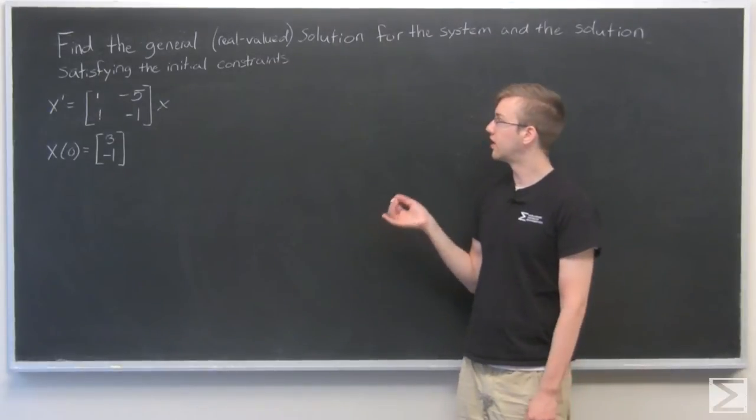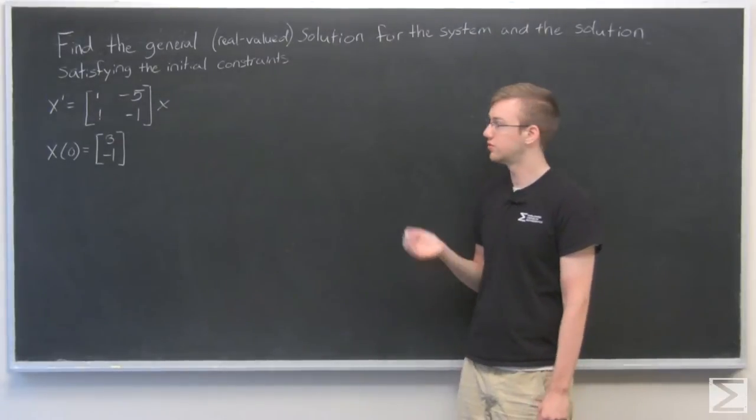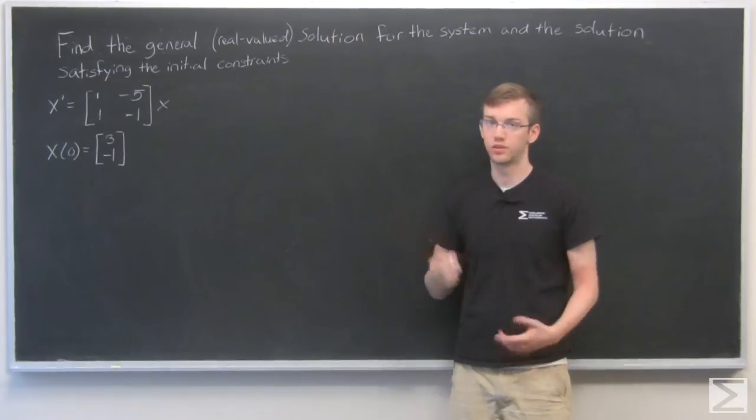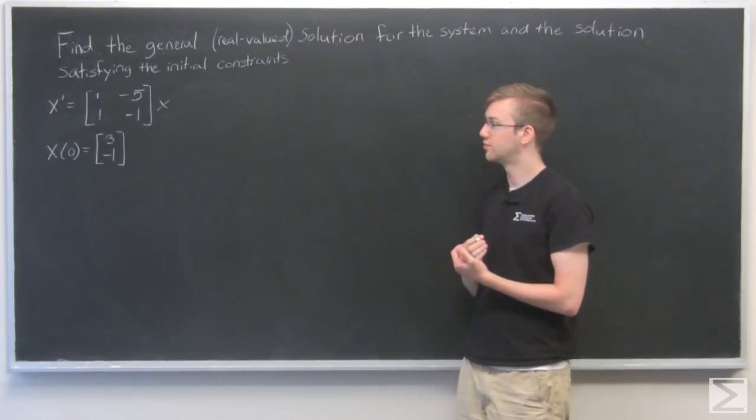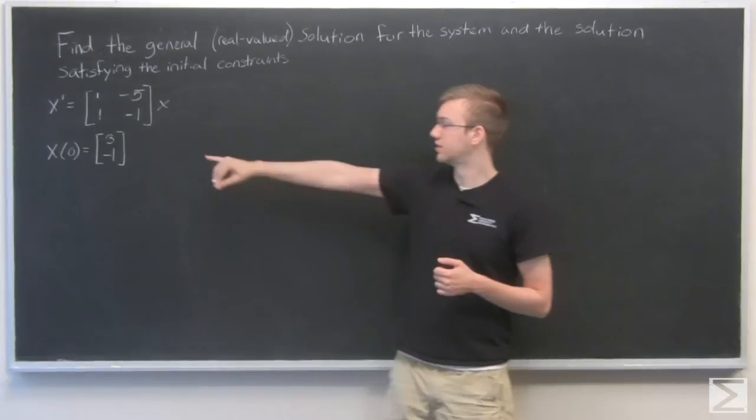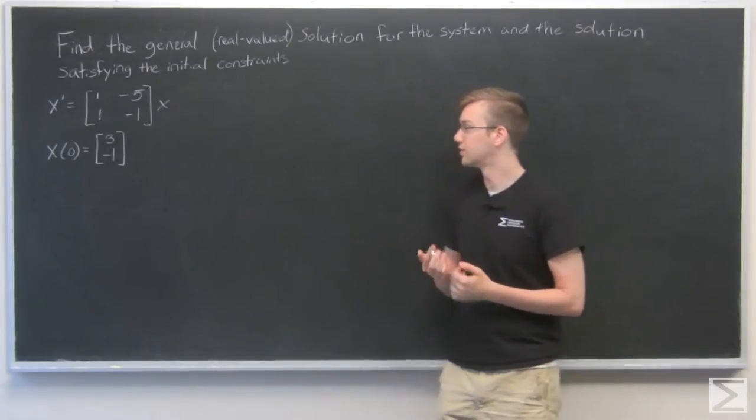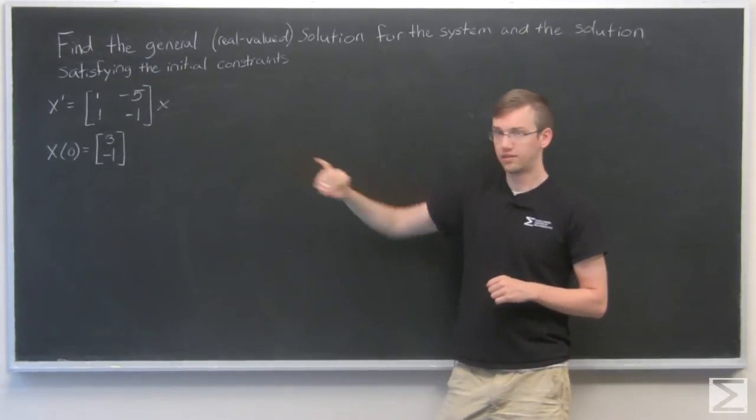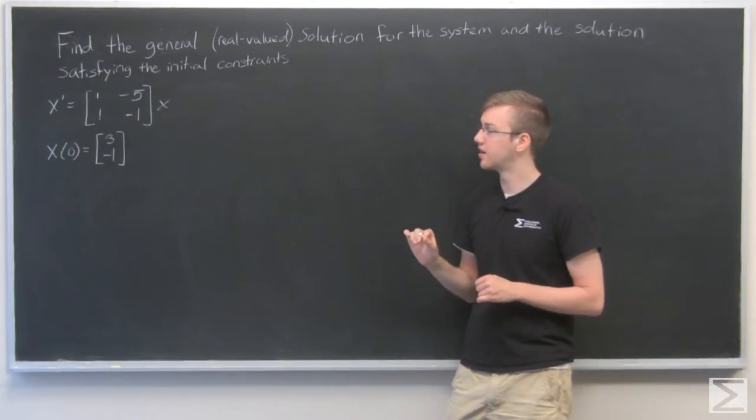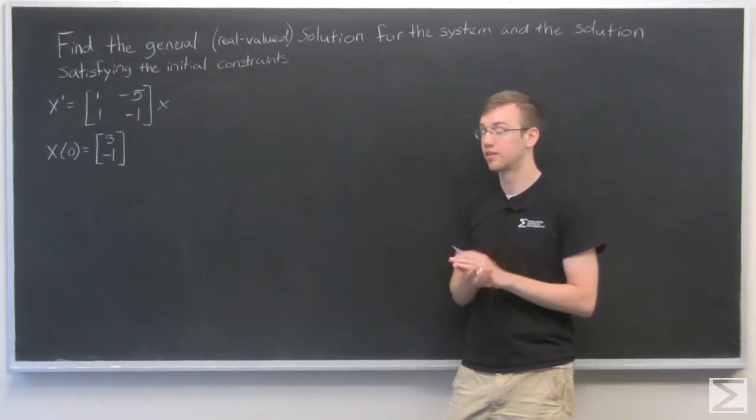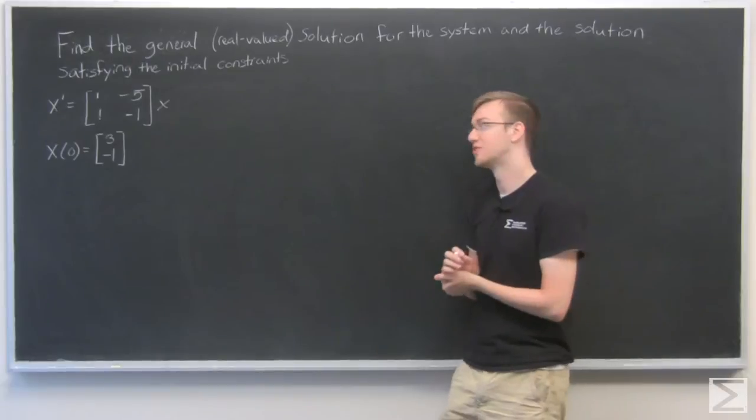For this problem, we need to find the general real valued solution for this system, and then we also need to find the particular solution that solves these initial constraints when x(0) equals [3, -1]. We're also told that this matrix right here has complex eigenvalues, so that's going to make things even more interesting for us.